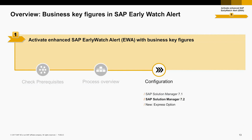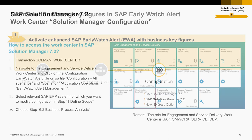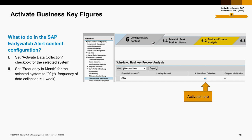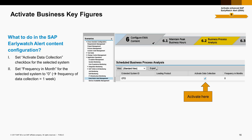Let's go through the activation steps in detail with SAP Solution Manager 7.2. First, navigate to the tile Configuration EarlyWatch Alert. Then set the Activate Data Collection checkbox for the ERP systems where you want to activate business key figures. This option is called Business Process Analysis. The parameter Frequency in Month is decisive for when the data collection happens in the managed system. Set this parameter initially to zero, which equals a data collection frequency of one week. You can change the frequency parameter later on to the default setting of three months once data is available in EWA.